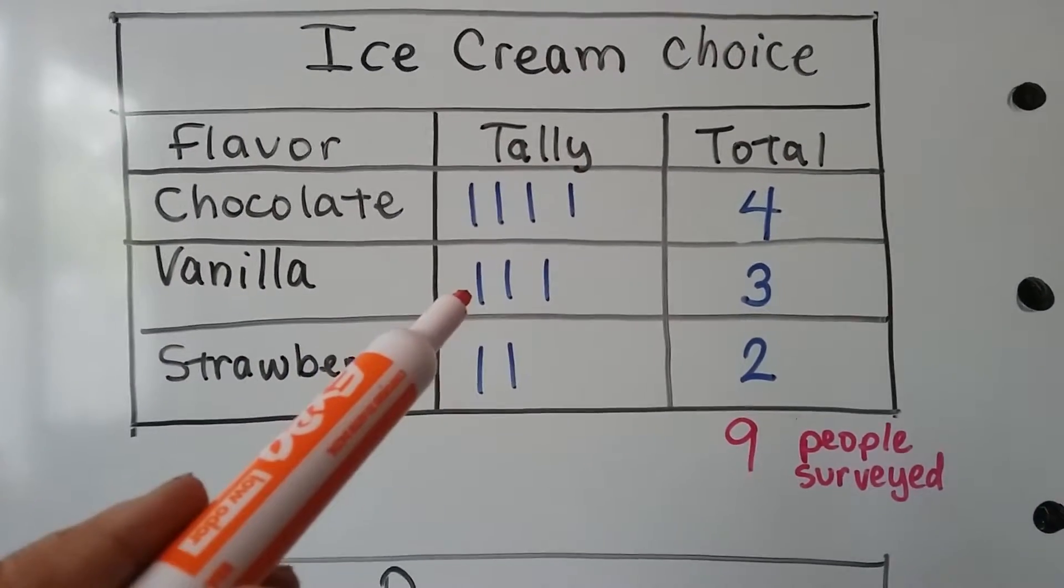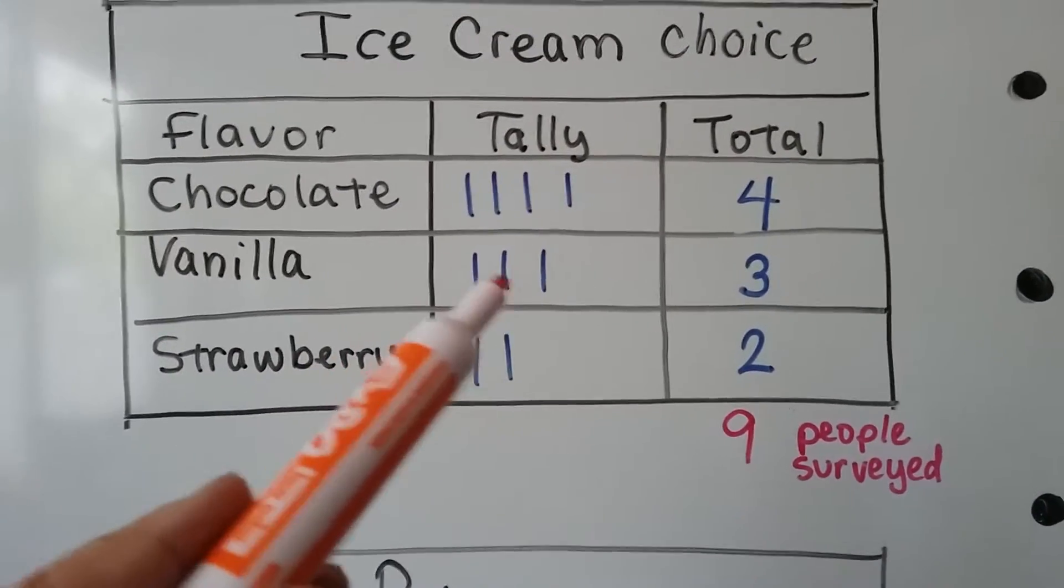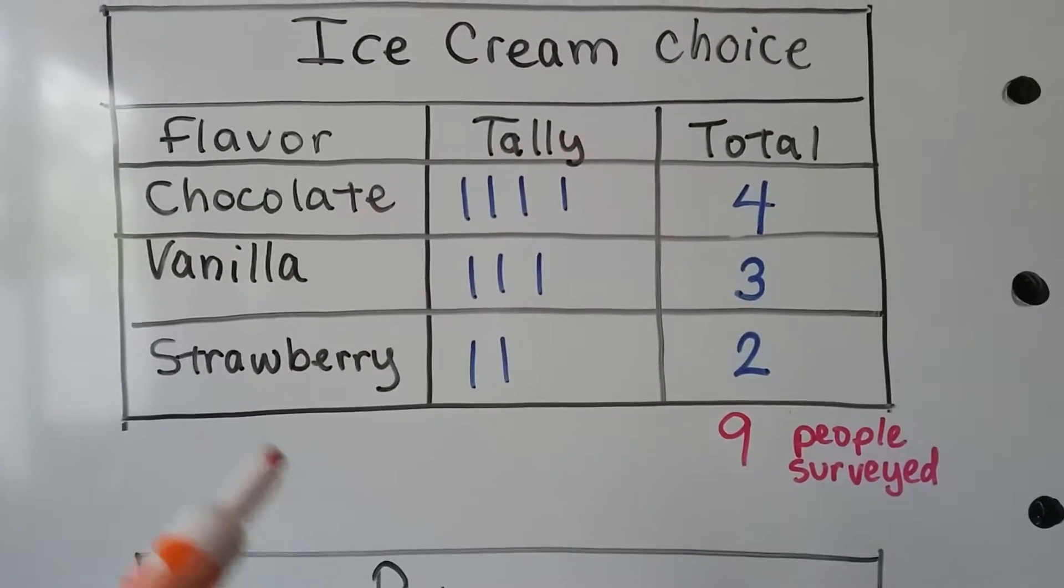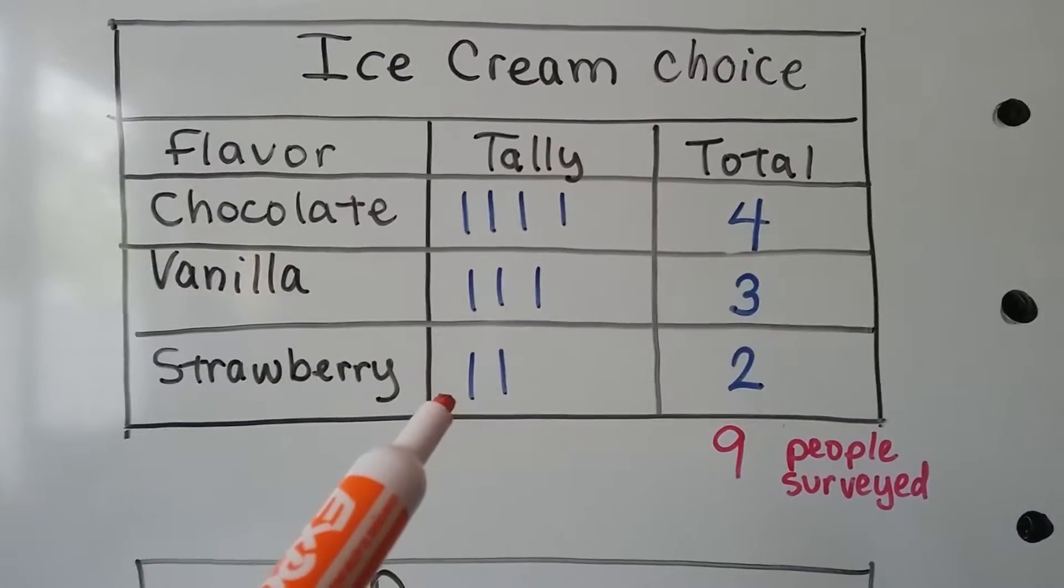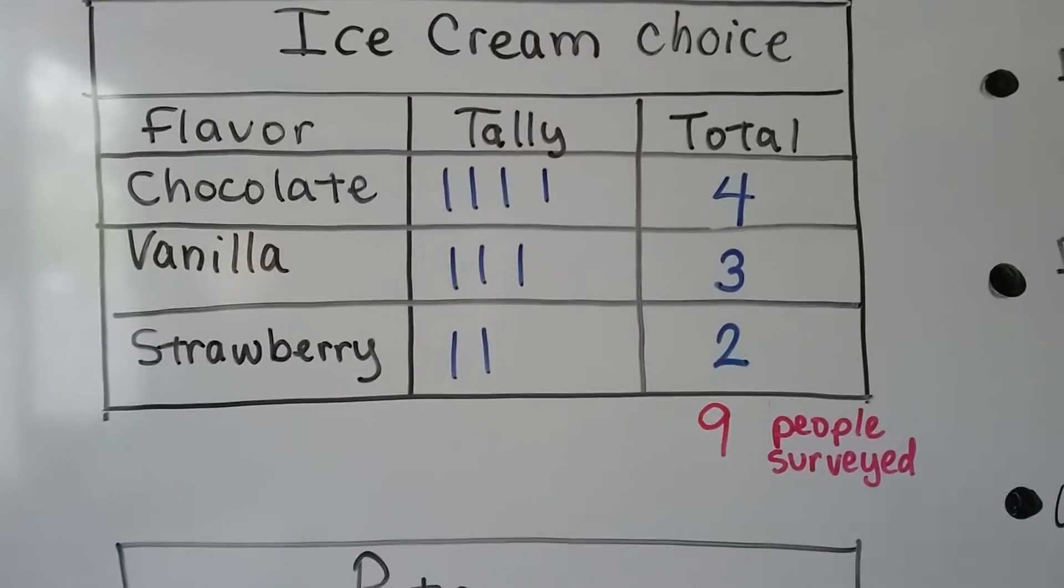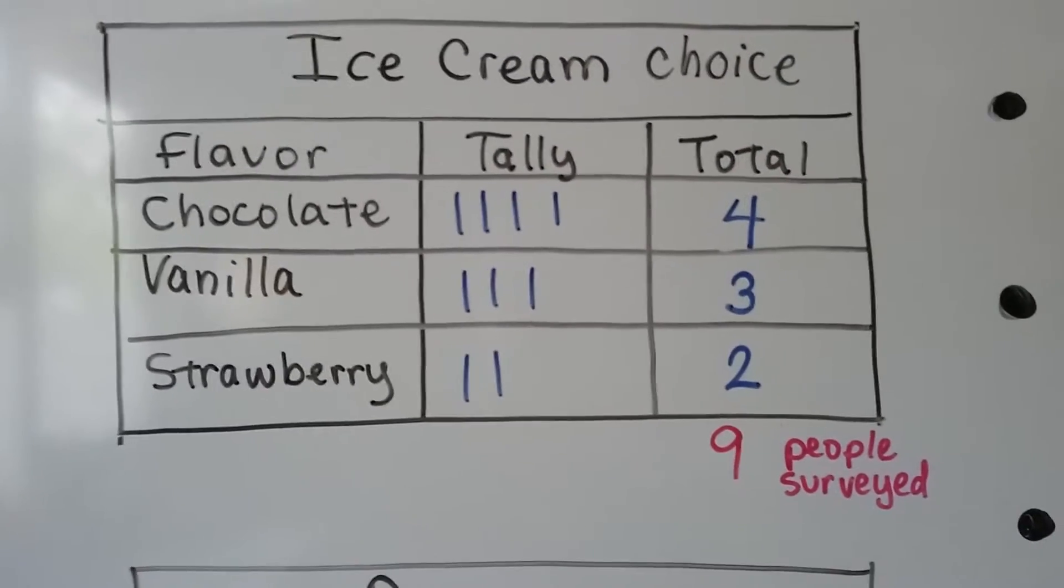Three of the people said they like vanilla. So that's three tally marks, a total of three. And maybe two people said they like strawberry. That's two tally marks. We have a total of nine people surveyed.